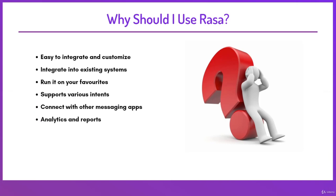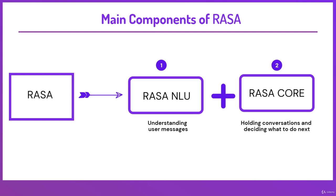The last point is analytics and reports. Rasa provides options to check various analytics and reports for your chatbot. It allows you to generate reports that help you understand how your model is performing on user input. It will generate confusion matrices and calculate metrics like precision, recall, and accuracy, so you can have a better grasp on your training data. Now let's move to the next slide: main components of Rasa.